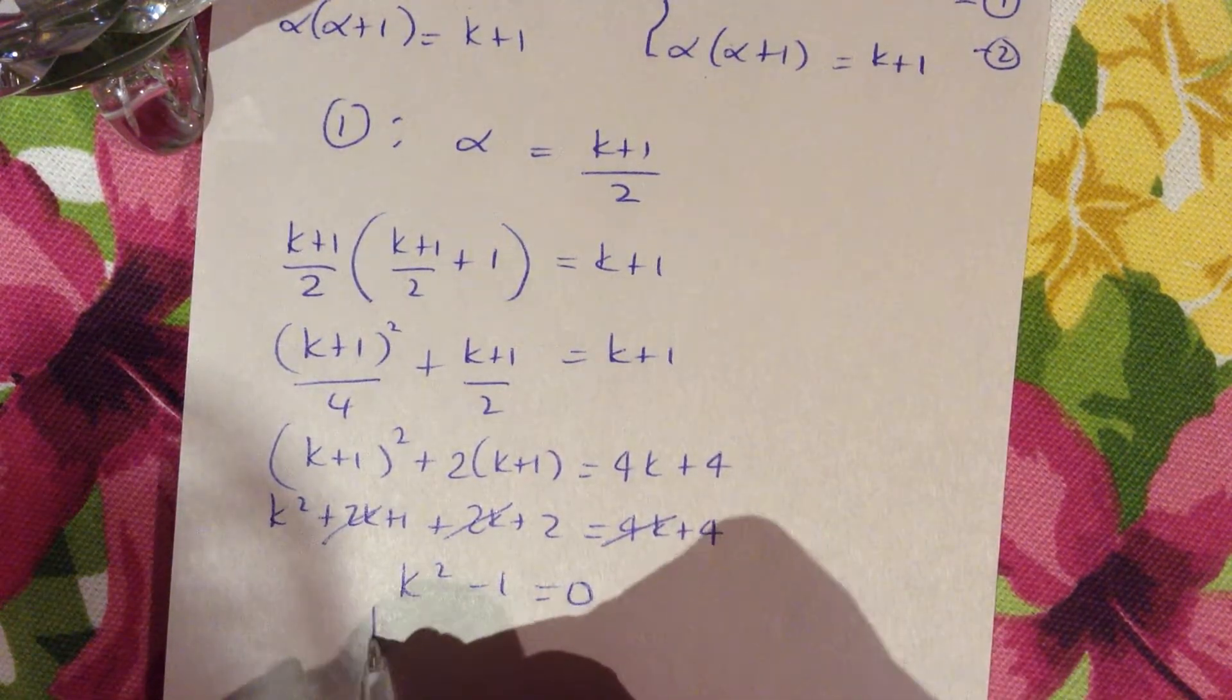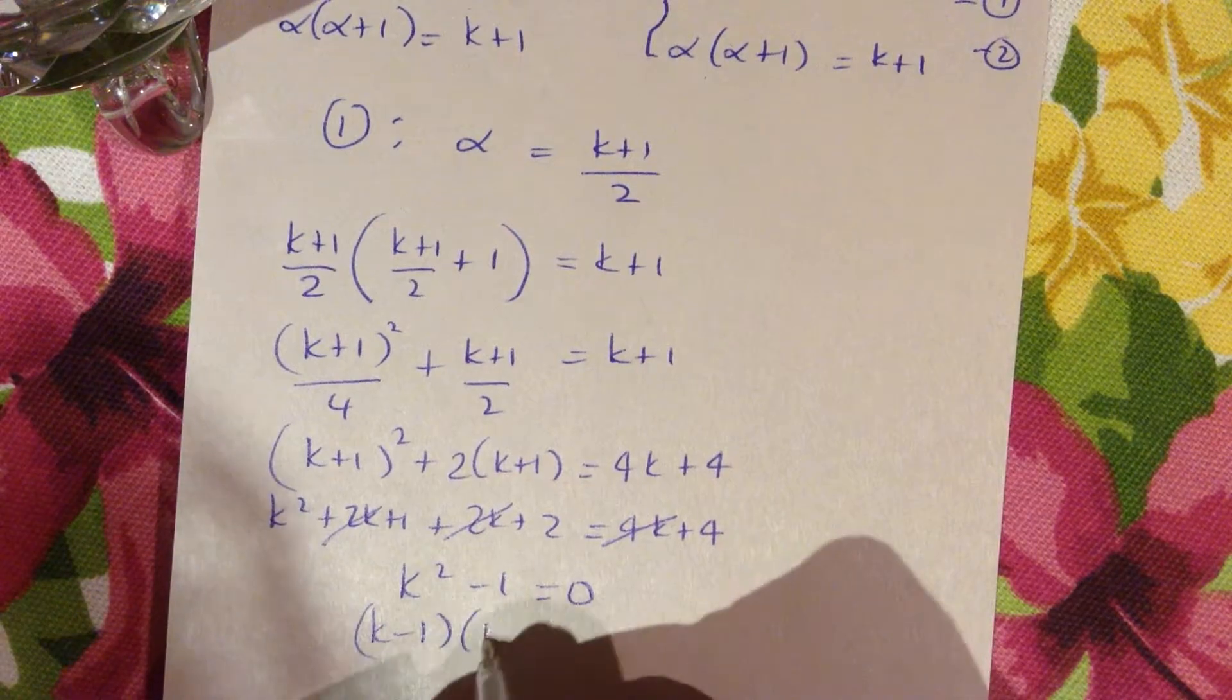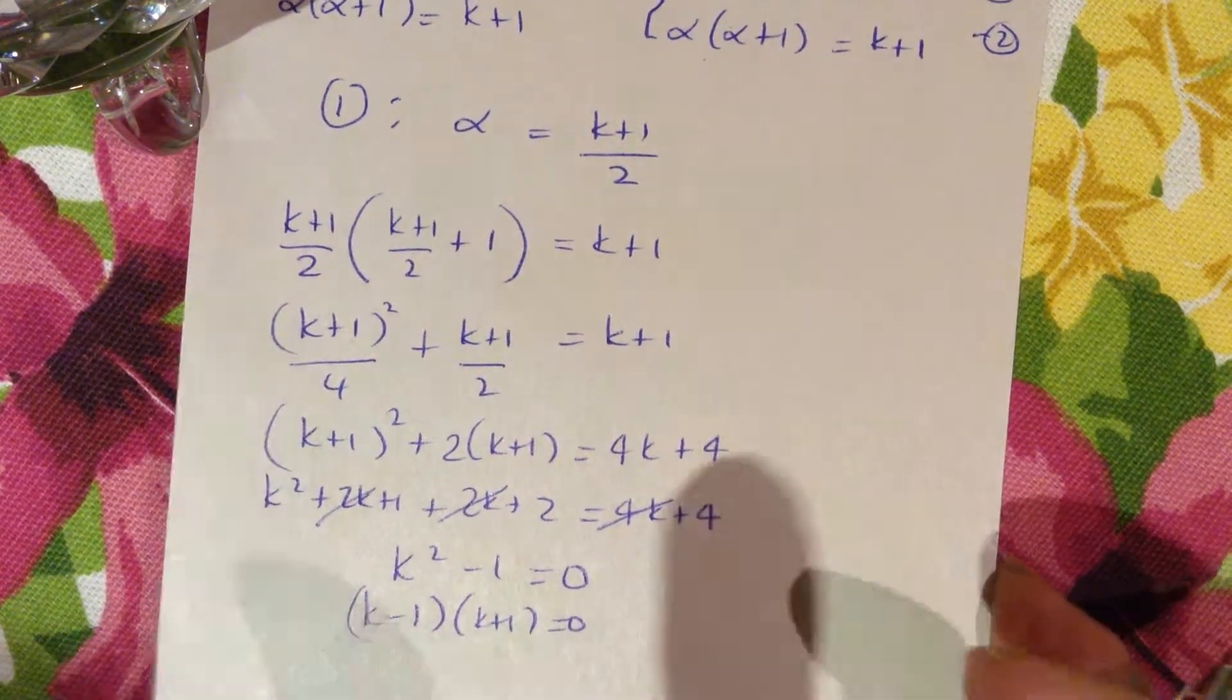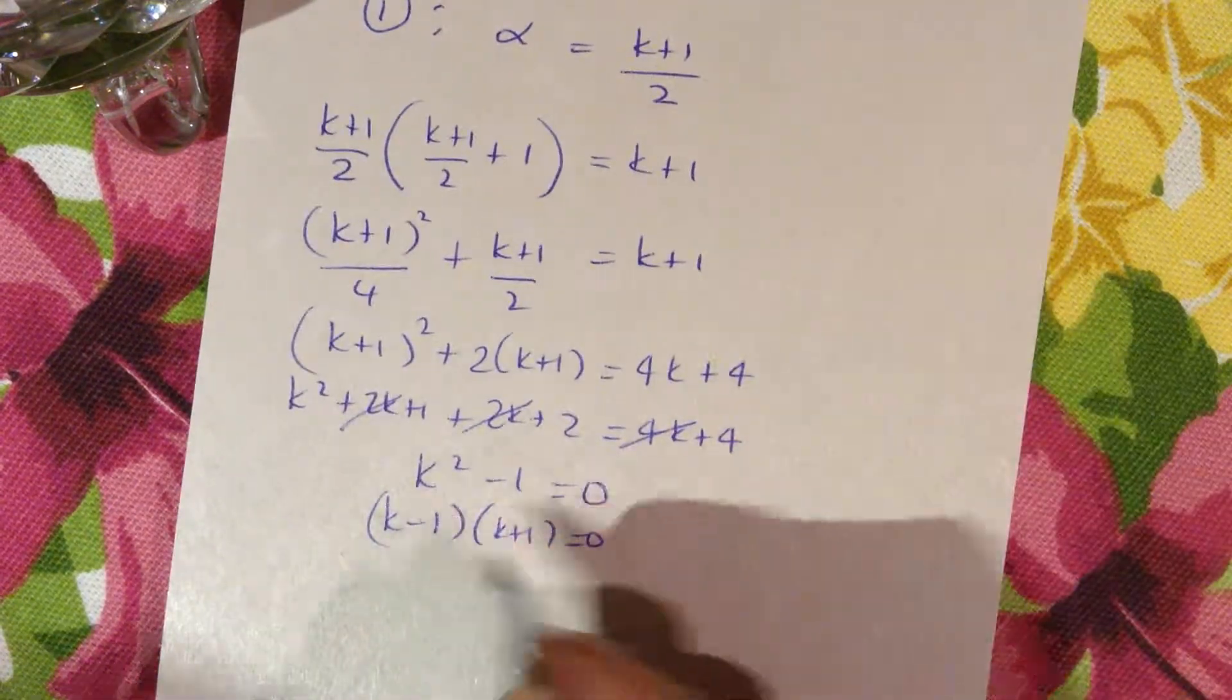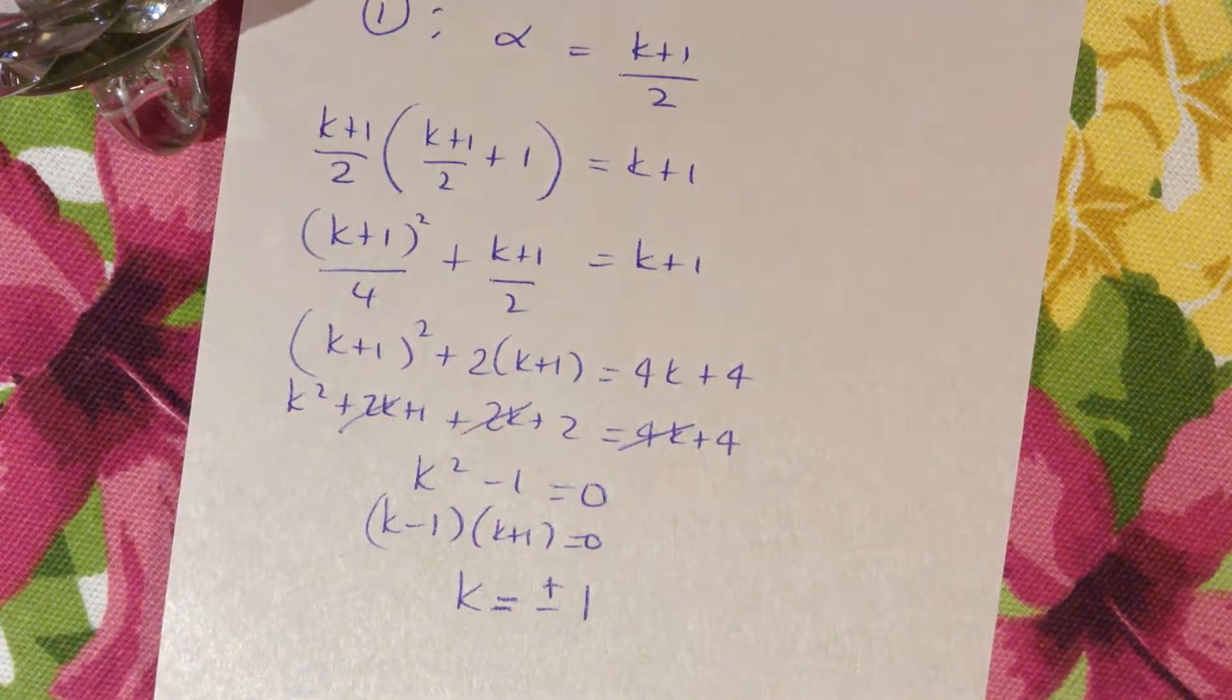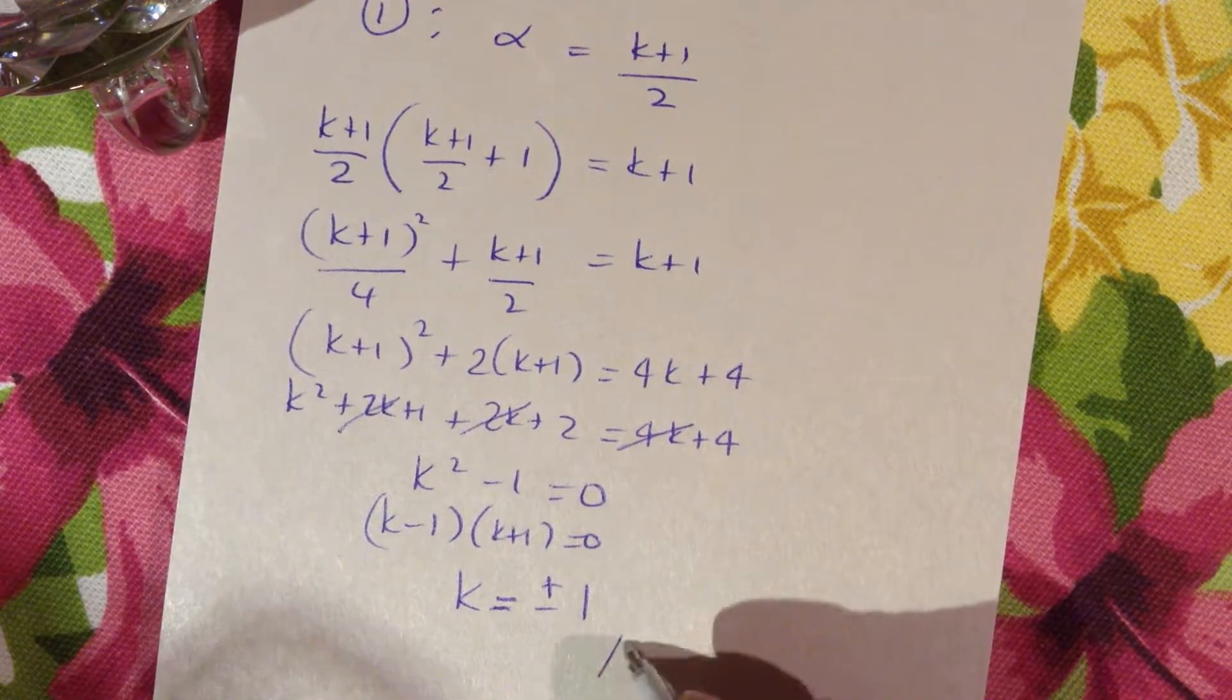That's a difference of two squares, and when you solve this, you're going to get that k = ±1. Those are the values of k.